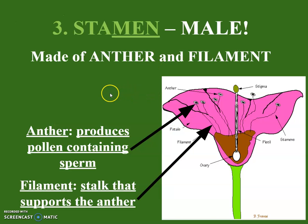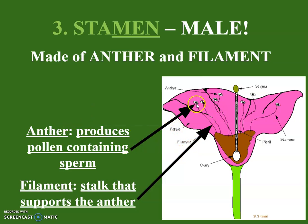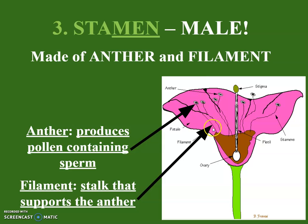The stamen is the male reproductive portion of the flower, and it is made of two parts. The anther is the tip, which produces the pollen containing the sperm for the plant. Then there's the filament, which is the stalk that supports the anther. The whole structure is called the stamen.